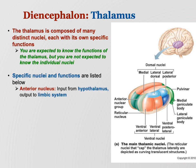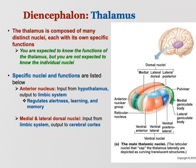The anterior nucleus takes input from the hypothalamus and sends output to the limbic system. The hypothalamus is the homeostatic control center, and the limbic system has to do with memory and emotions — so homeostatic information is being linked to our memory and emotion center, regulating alertness, learning, and memory. The medial and lateral dorsal nuclei take input from the limbic system and send output to the cortex, allowing emotions to mediate thinking, learning, and memory — you know from experience how being emotional can affect your thinking and color your memories.